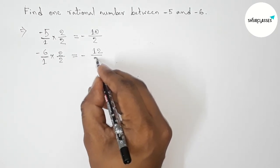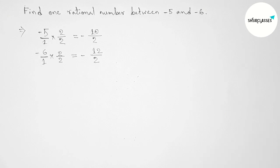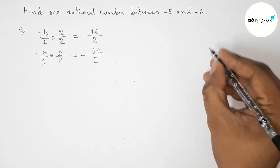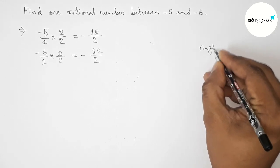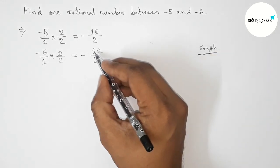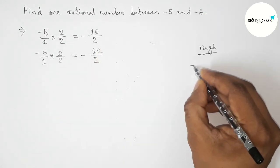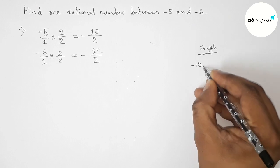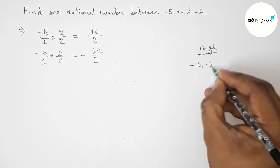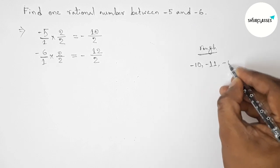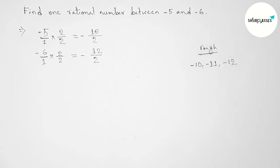Okay, so here both the denominators are same. So now, roughly discussing here some important calculation. So now between minus 10 and minus 12, we can get only one negative integer, that is minus 11.